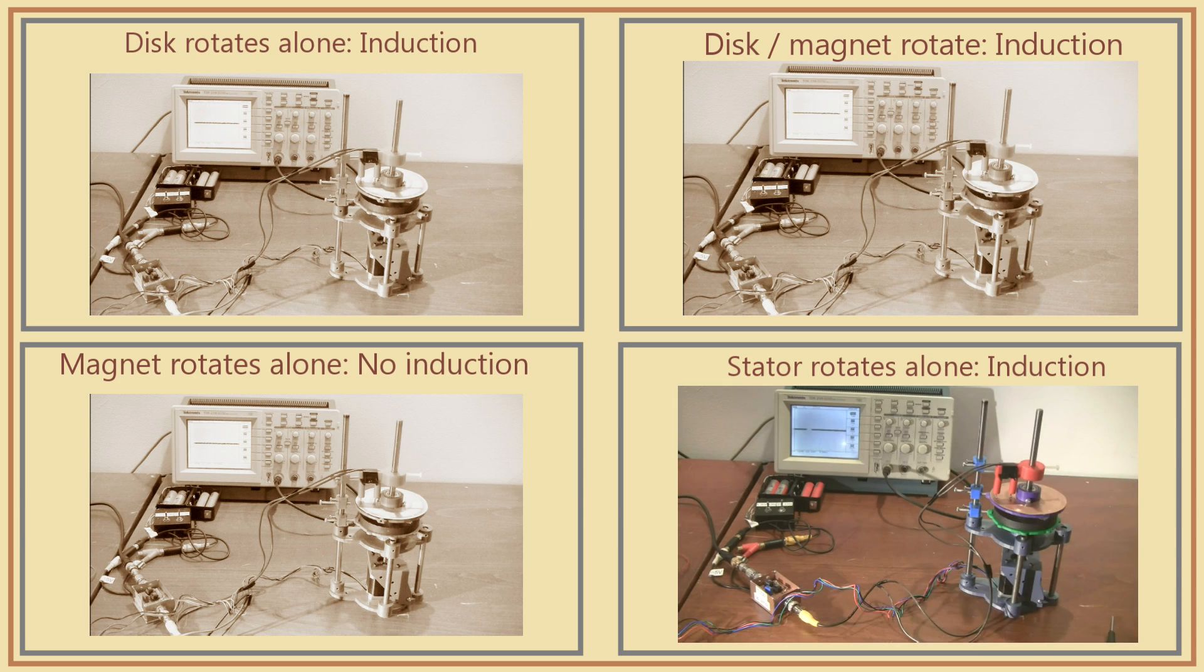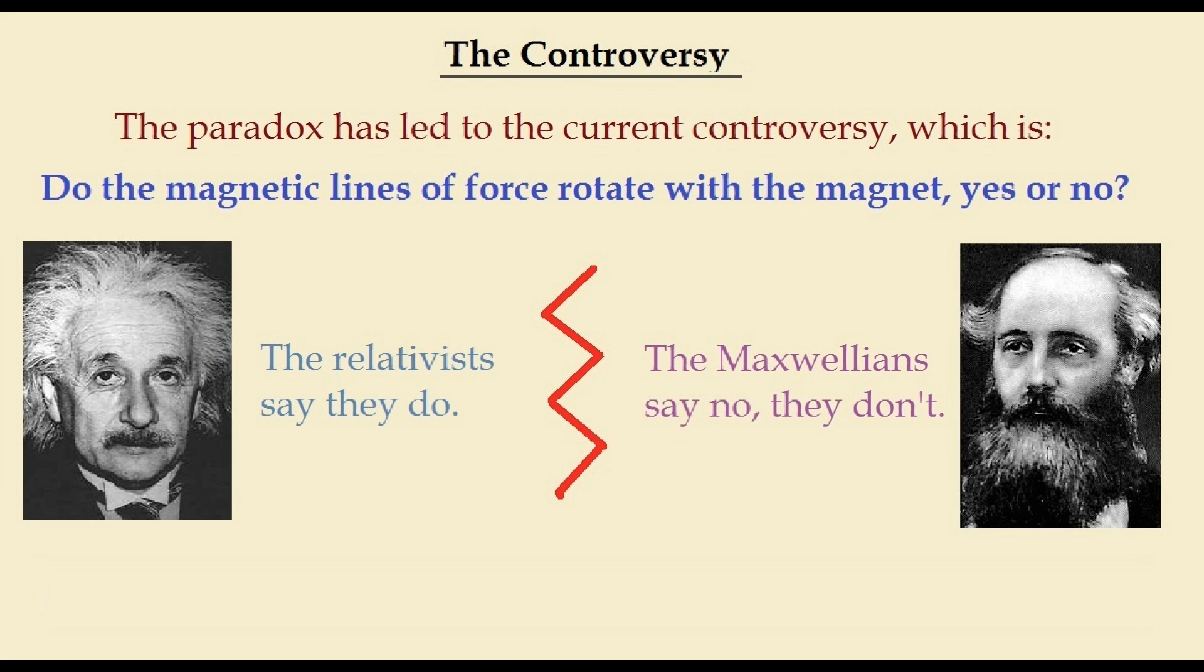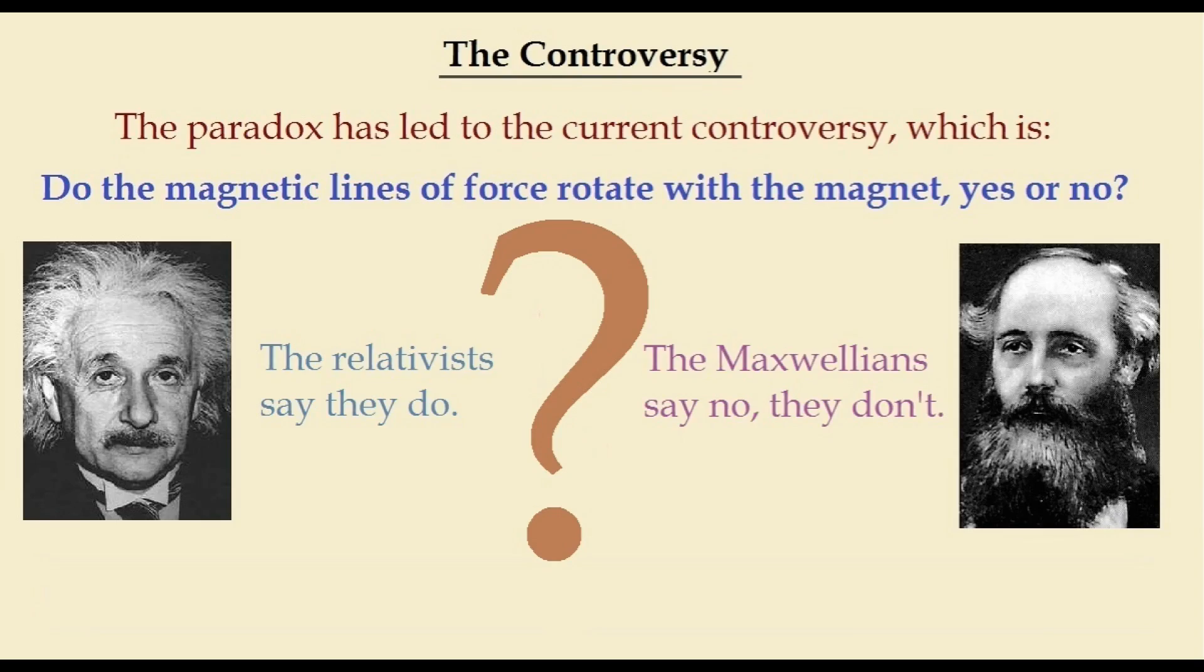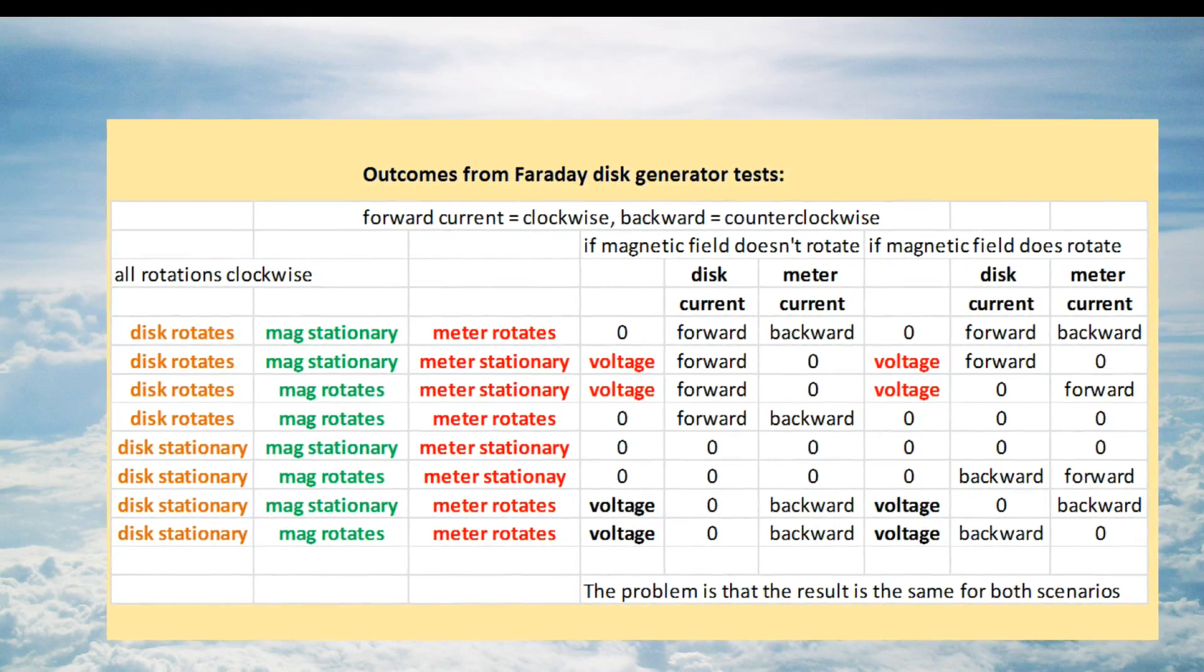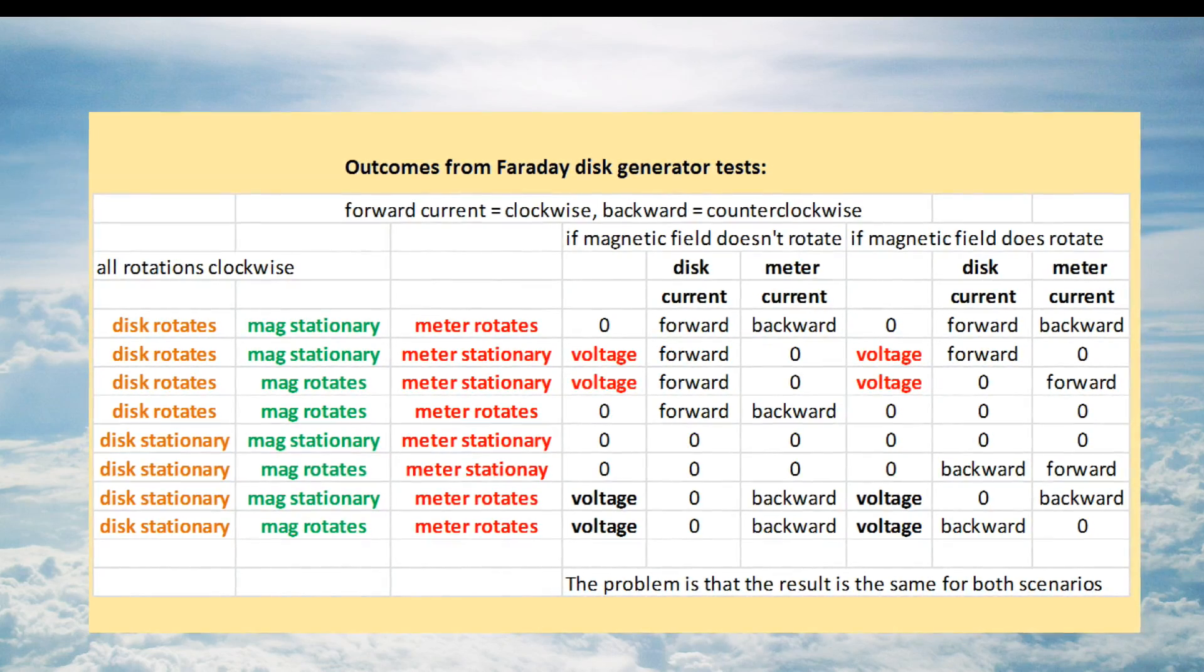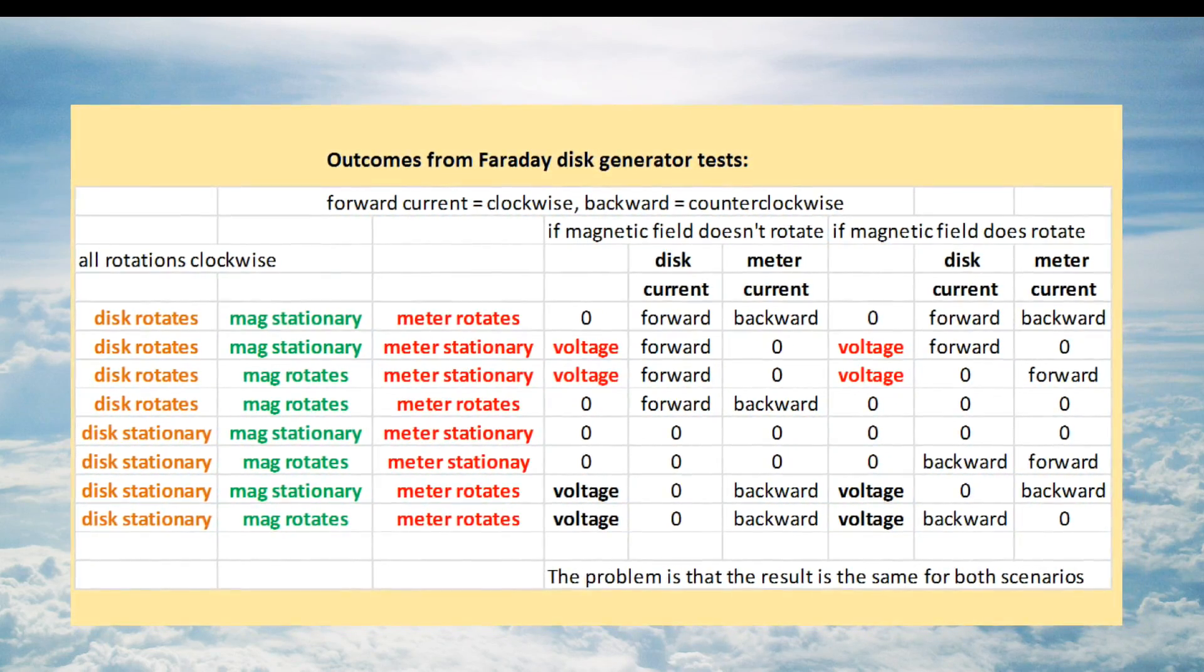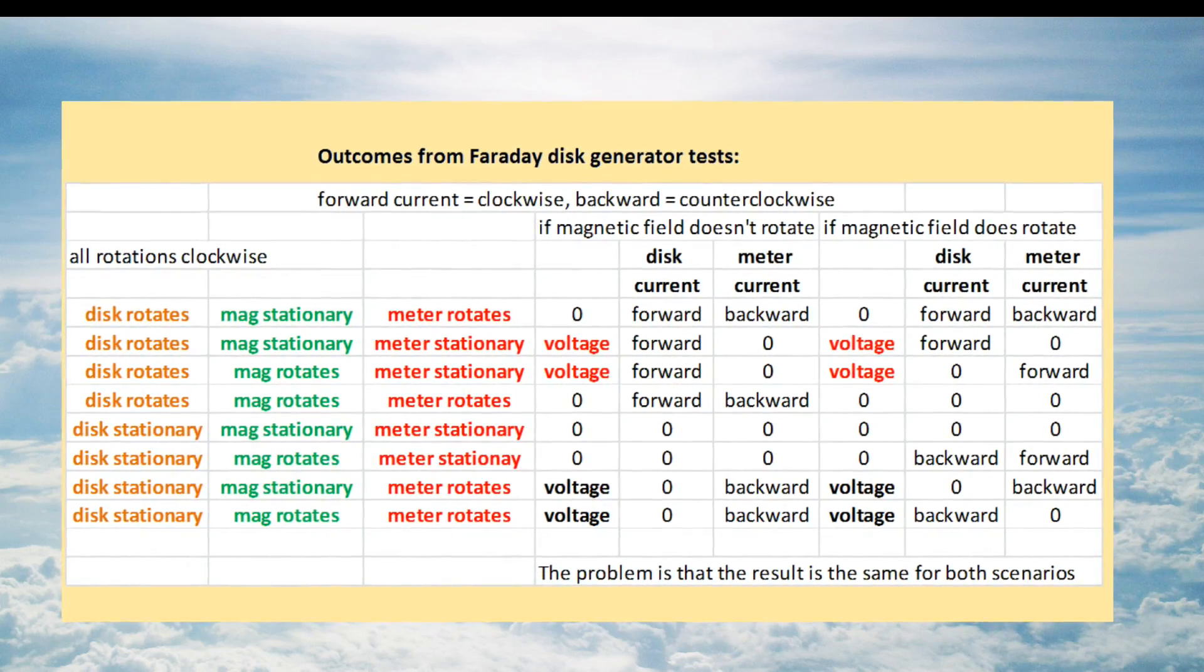The results have led to some controversy since they can be explained by either the magnetic field rotating with the magnet, or the magnetic field remaining stationary when the magnet rotates. So which explanation is right? The problem with the generator as currently designed is that for the eight possible tests that we can perform, the outcomes will be identical if the magnetic field rotates or not. So we can't solve the dilemma using closed circuits.